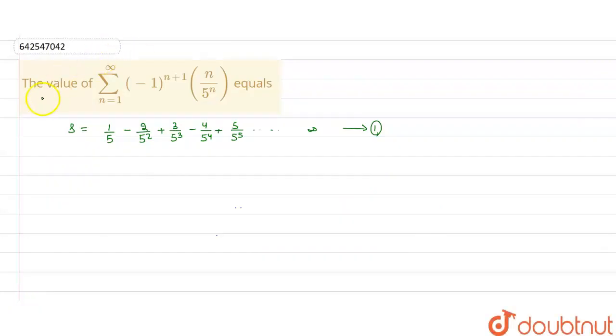So, here we have a question. The value of summation n equals 1 to infinity, minus 1 to the power n plus 1, times n over 5 to the power n, equals what?